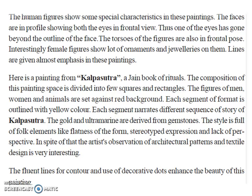This is the painting from Kalpa Sutra, a Jain Book of Rituals. The composition of this painting space is divided into a few squares and rectangles. The figures of men, women, and animals are set against a red background. Each segment of the format is outlined with yellow colors. Each segment narrates a different sequence of the story of Kalpa Sutra. The gold and ultramarines are derived from gemstones.